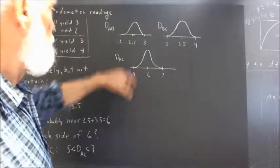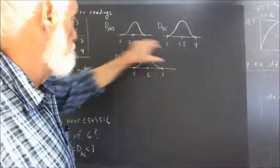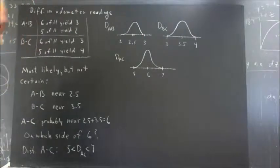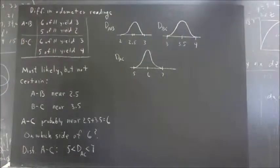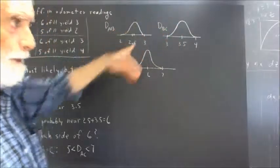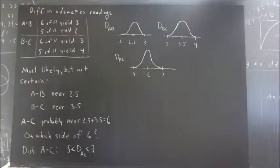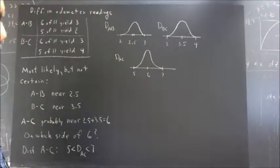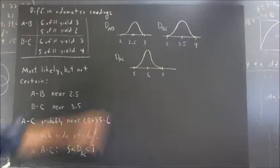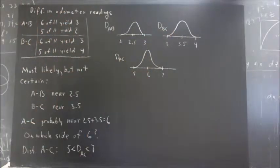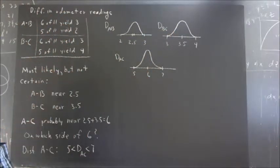We could make a similar picture for distance A to C. We know it can't be less than 5, can't be greater than 7. We think that most likely it's pretty close to 6. We could go a lot deeper into the analysis of these curves and how they'd be combined, but we need a lot more machinery. That comes later when you have much more mathematical experience. Just the intuitive idea that these could be combined into this in some way is really worth having.